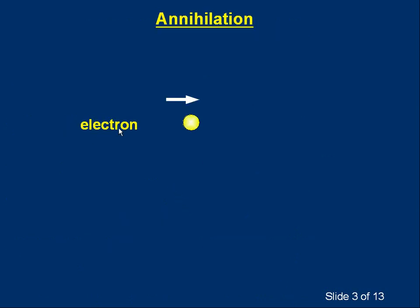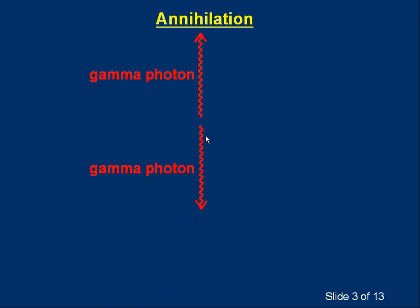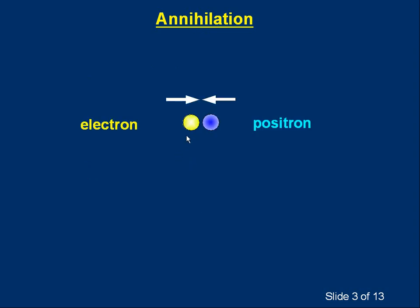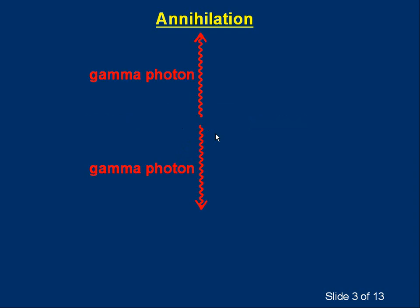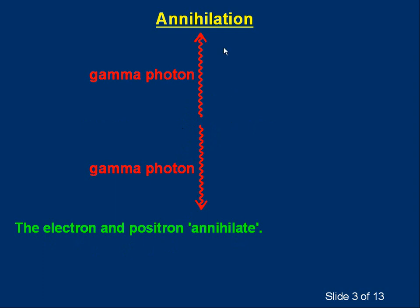Suppose an electron is moving to the right, as shown by the arrow, and it meets a positron moving to the left. What happens when they meet? The electron and positron are gone. In their place, we have two gamma photons — two high-energy photons. The electron meets the positron, they disappear, they're destroyed, and all that's left are two gamma photons. We say the electron and positron annihilate, and the process is called annihilation.